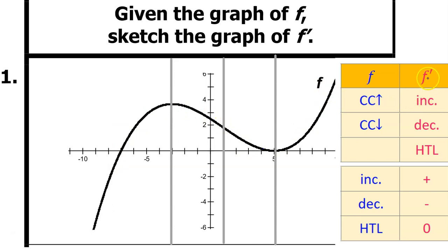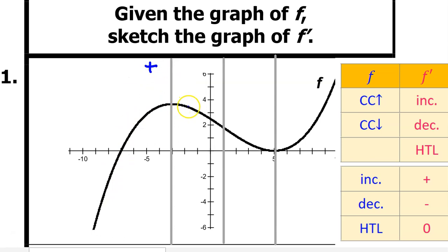Our goal is to sketch a possible graph of f prime. I'm going to label each interval according to what f prime is doing. Wherever f is increasing, f prime will be positive. Wherever f is decreasing, f prime will be negative. So in the first interval, f is increasing, so f prime will be positive. In the next interval, f is decreasing, so f prime will be negative. Next interval, f is still decreasing, so f prime will still be negative. In the last interval, f is increasing, so f prime will be positive.